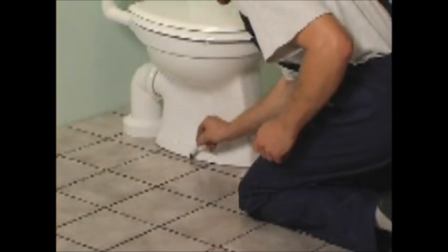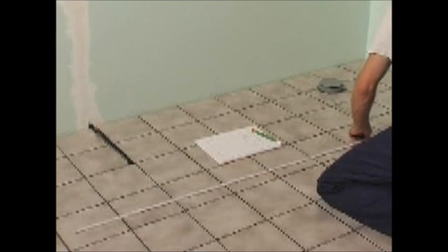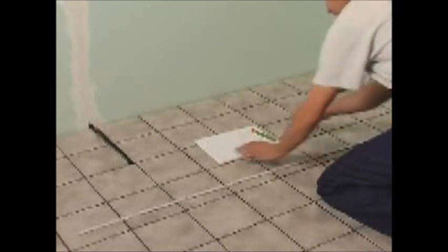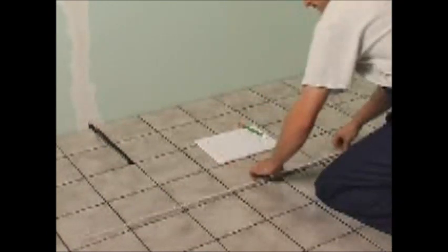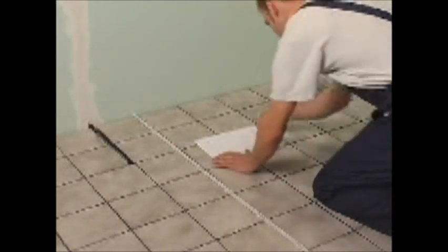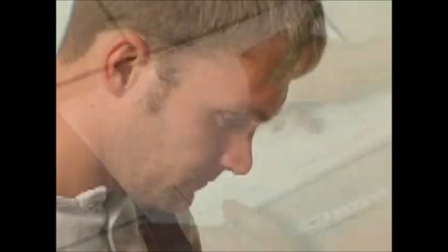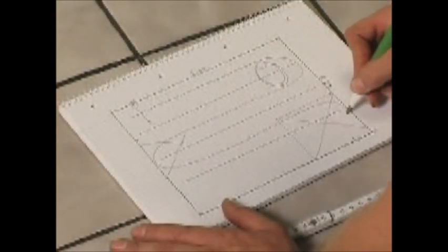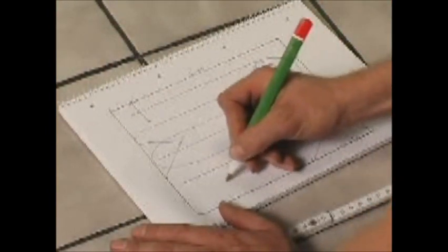Start by drawing a line around any objects where you don't need to install the floor heating. Make a drawing of the room and calculate the area where you need Danfoss heat mats. Remember to deduct the areas under cupboards standing on the floor and under the toilet.